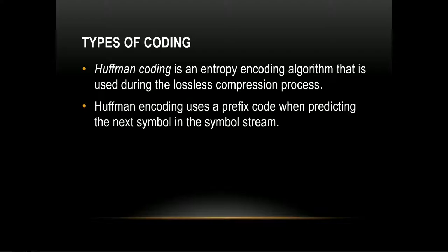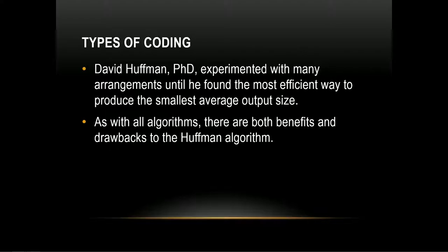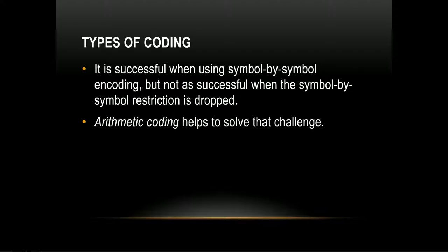Huffman coding is an entropy coding algorithm used during the lossless compression process. It uses a prefix code when predicting the next symbol. Huffman has a PhD and experimented with arrangements until he found the most effective way to produce averages. His approach is very successful when using symbol-by-symbol encoding, but not as successful when that restriction is dropped — which is where a different type of encoding helps solve that challenge.